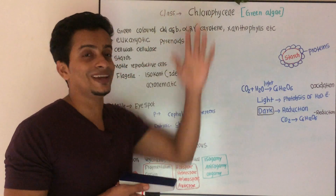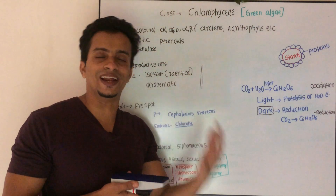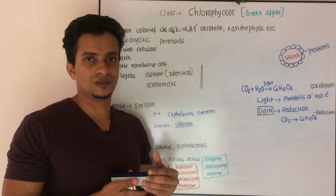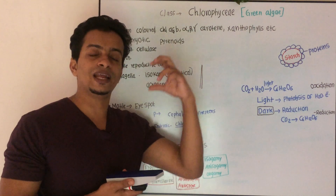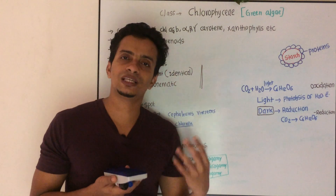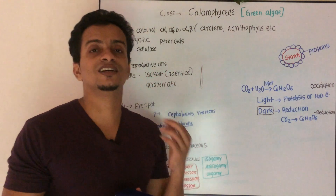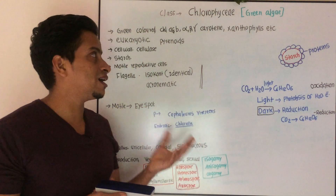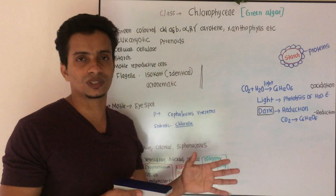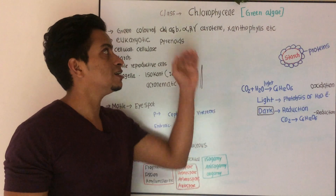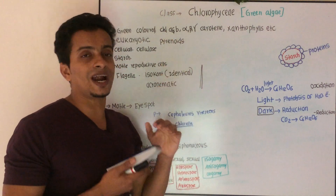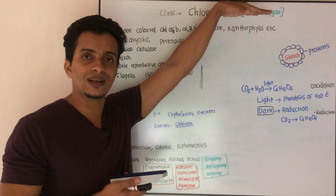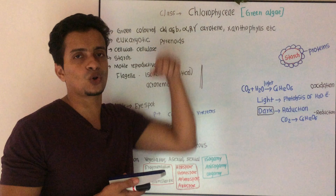Green algae are in a group. There are many types, many species — there are Edagonia, Volvox, and many others. The green appearance is in the category of Chlorophyceae.